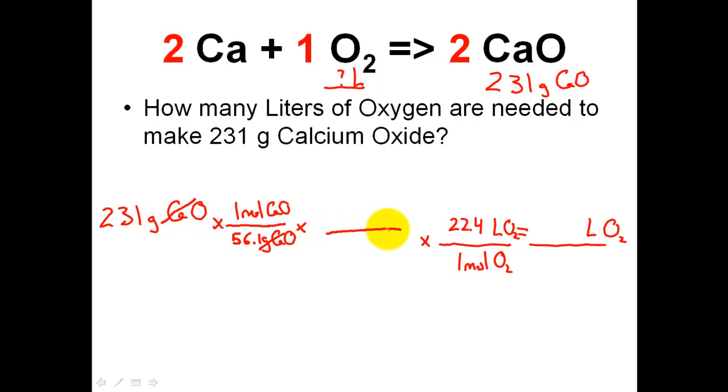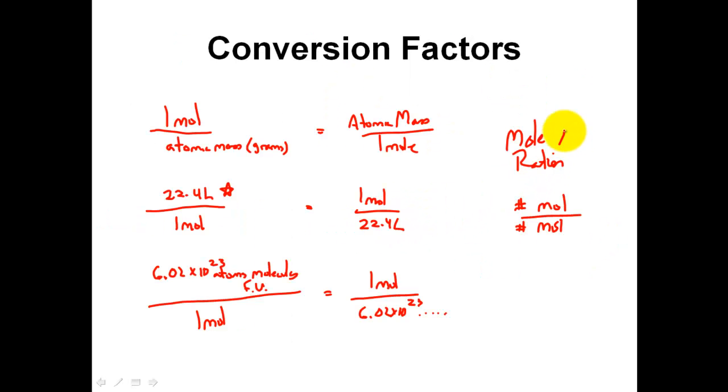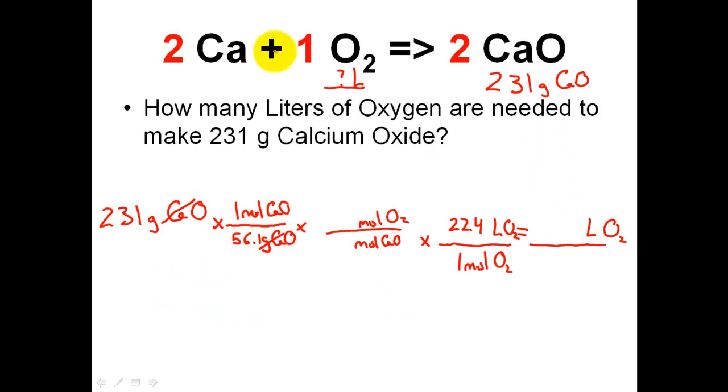My next conversion factor is going to have moles of CaO on top. I need to cancel it out down to the bottom with moles of CaO. And because I'm going into liters of O2, I need to have mole of O2. This actually is the mole ratio, where we have moles of the first and moles of the second. And we get those numbers from the balanced chemical equation, these coefficients. So for CaO, the coefficient I reference is 2. For oxygen, the coefficient I reference is 1.